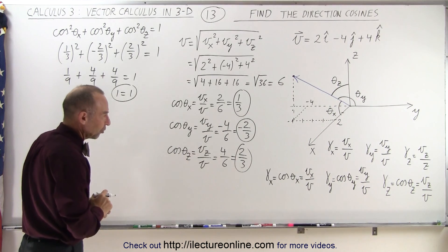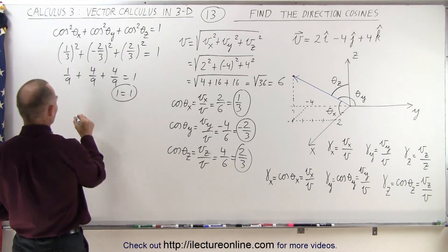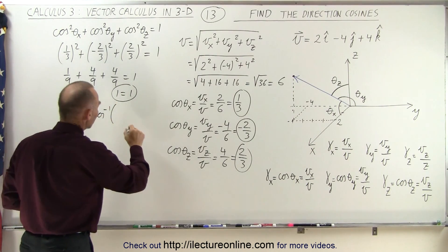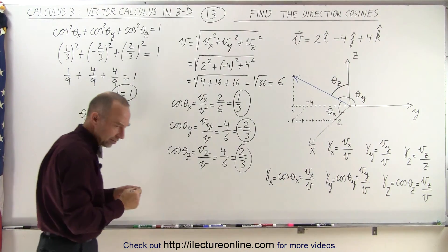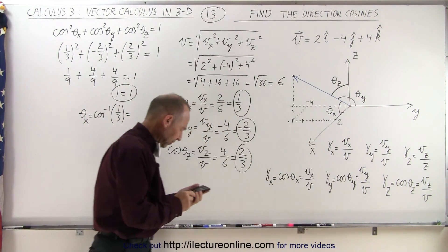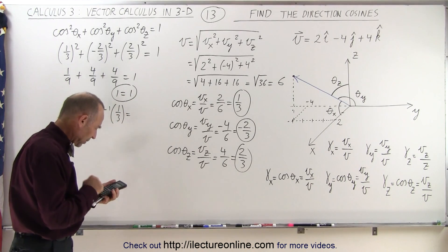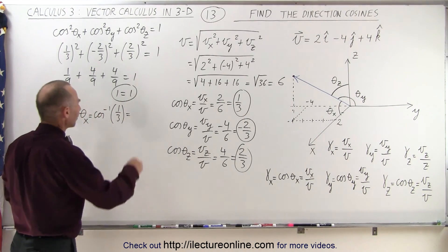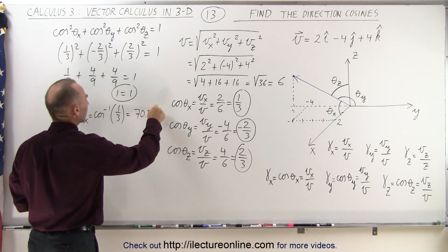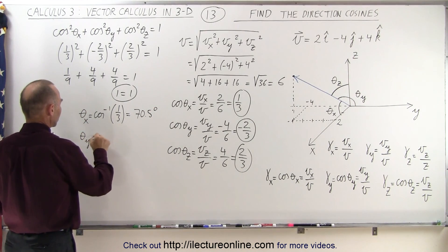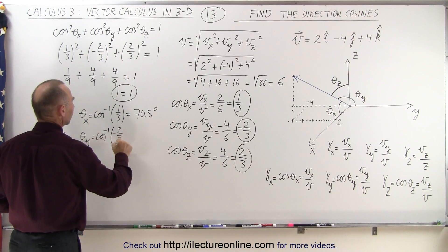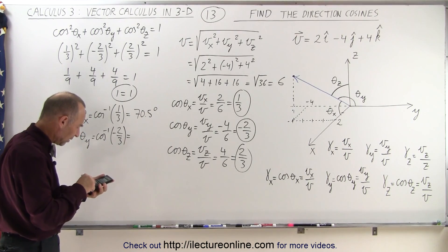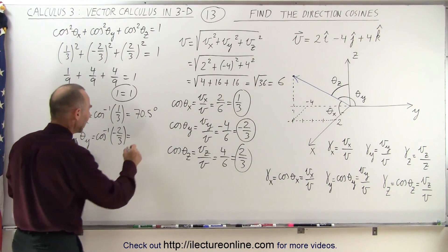Finally, let's find the angles associated with those three direction cosines. Theta sub x is equal to the inverse cosine of 1 third. In the calculator: 1 divided by 3, take the inverse cosine — that gives us 70.5 degrees. Then theta sub y is equal to the inverse cosine of negative 2 thirds. With the negative sign, the inverse cosine gives us 131.8 degrees.